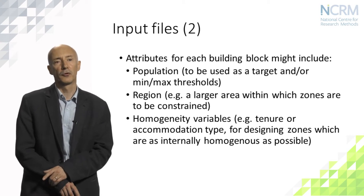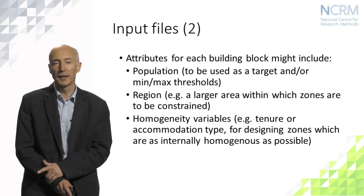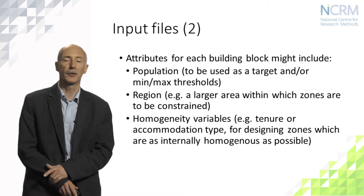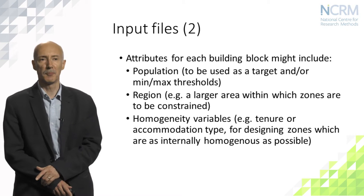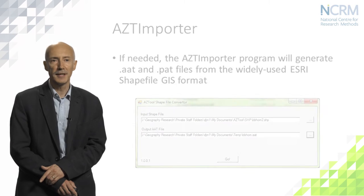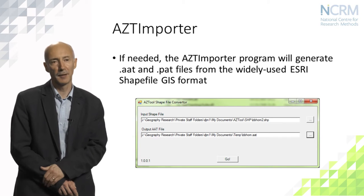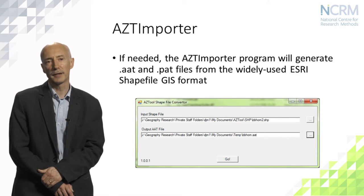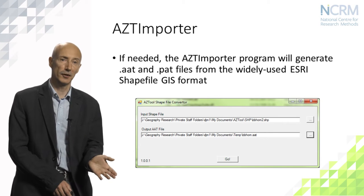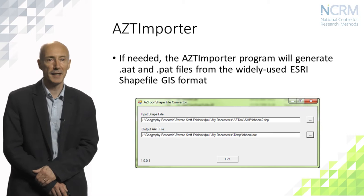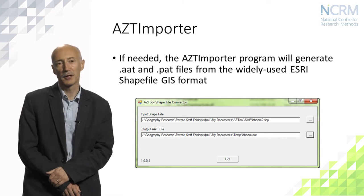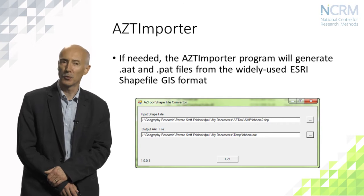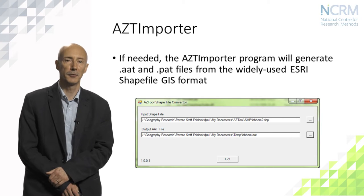It is possible to use your own software or even manually create those input files. But in most circumstances the data will come from a GIS. The AZT importer utility, available with AZTool, will take the widely used shapefile GIS format and create these two files. Here we see the sole interface to AZT importer — we give it the identity and location of the shapefile and it will create the arc and polygon attribute tables.